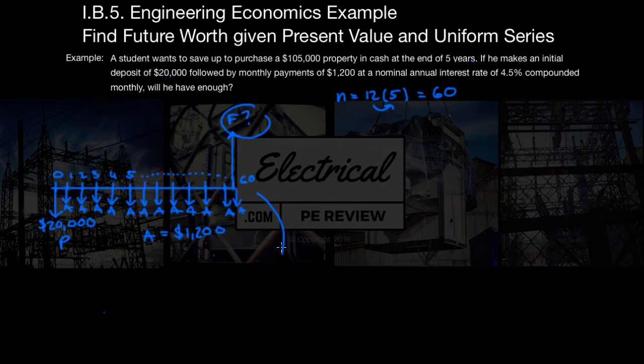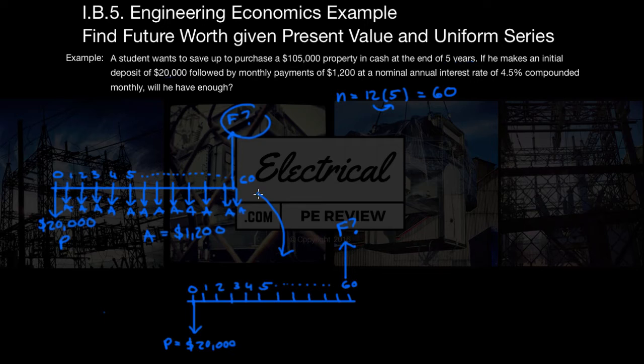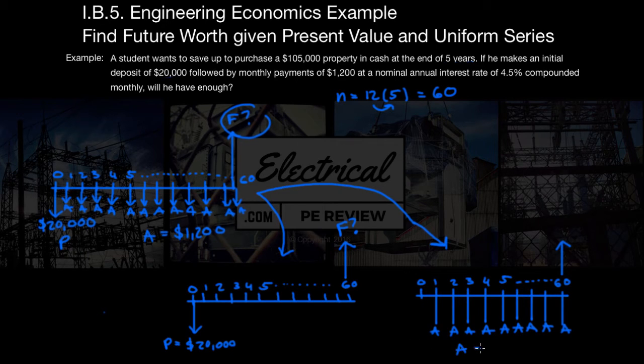Our first one, if we look at just the present worth, is going to look something like this, where we have an initial deposit of P equals $20,000 and nothing happens from zero all the way to N equals 60, at which case we make a withdrawal. We want to know what that withdrawal amount is. And the second cash flow diagram is going to look something like this, where we have monthly payments of $1,200, starting from N equals 1, all the way up to N equals 60. We want to find what the future worth equivalent is going to be of all of those.